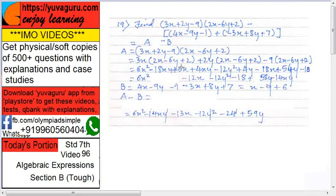Then 12x, this 6x, and there is one 18x, so plus minus minus minus, minus 12x. Similarly, check for others, and you will get this answer: 6x square minus 12x minus 12y square minus 18, plus 58y minus 14xy.